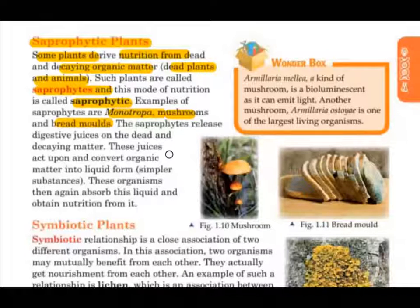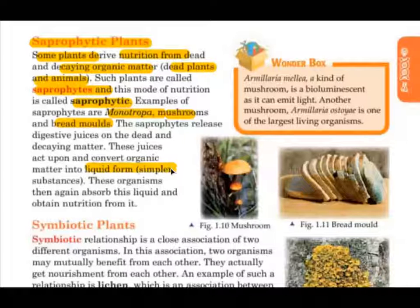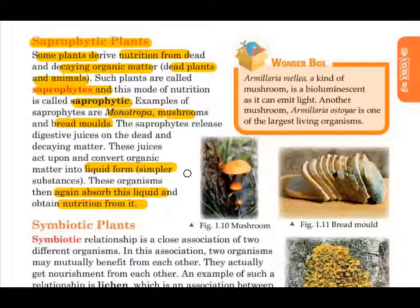These juices act upon and convert the organic matter into liquid form — simpler substances. The organisms then absorb this liquid and obtain nutrition from it. In simple terms, saprophytes release a digestive juice on dead matter, which converts into liquid form, and the saprophyte then consumes it to complete its nutrition.